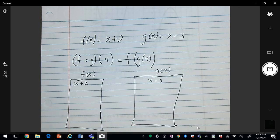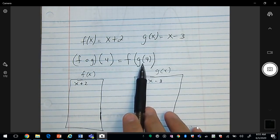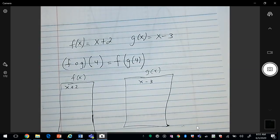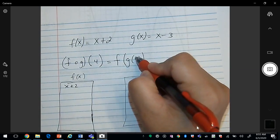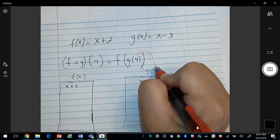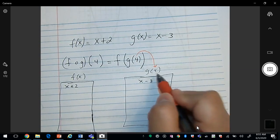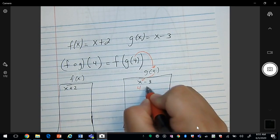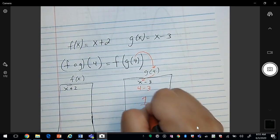So what happens is, you first want to visit the machine that is in the parentheses, so we're going to work with g of x. And so what we're going to do is, we have a 4 here. The 4 is going to replace the x. So anywhere you see an x, we're going to replace it with 4. So we get 4 minus 3, which is 1.